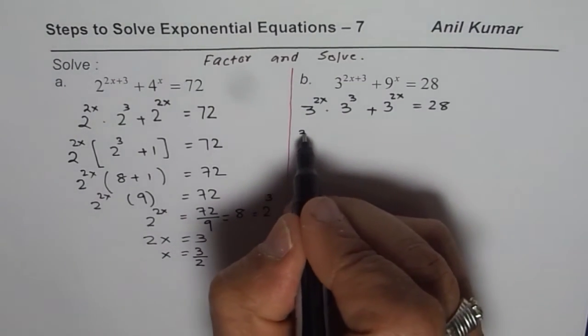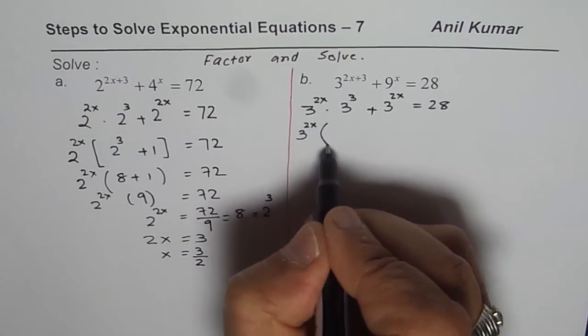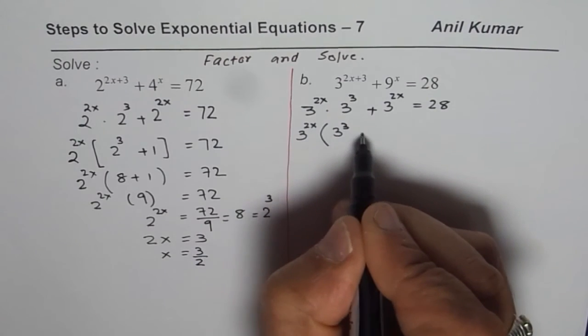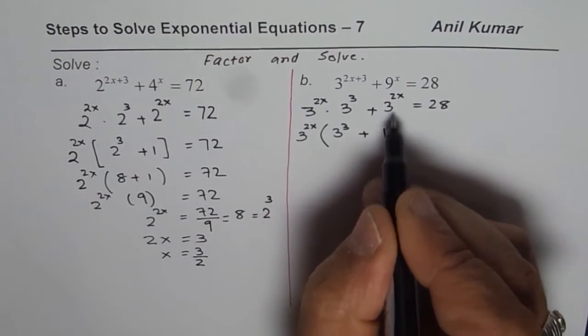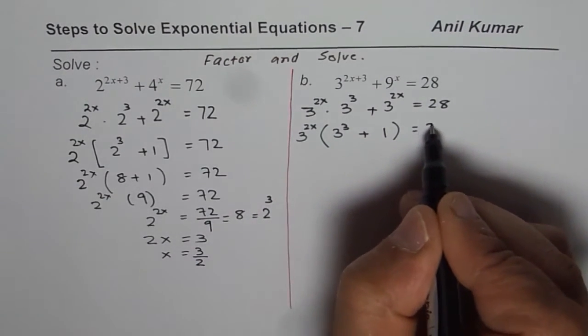Now we will take 3 to the power of 2x common. So we are left with 3 to the power of 3 plus 1 since we have already factored this out, which is 28.